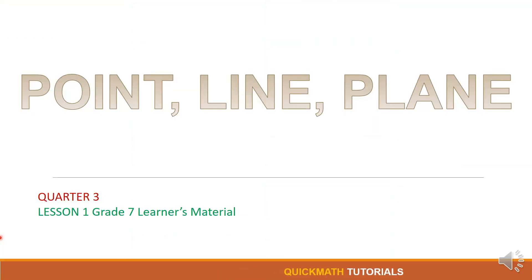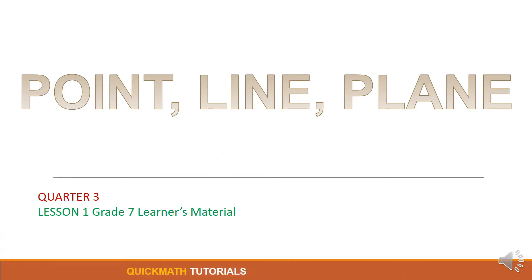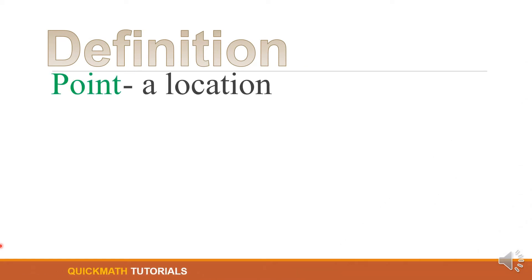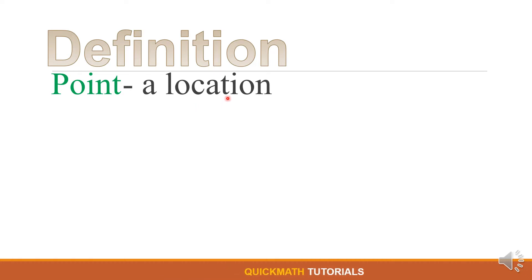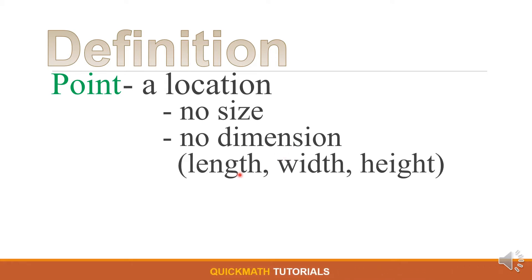Good day everyone, welcome to another episode of Quick Math Tutorials. Today we are going to learn about point, line, and plane. First, let's define what is a point. A point indicates a location — it has no size and no dimension. When we say dimension, we have the length, width, and height.